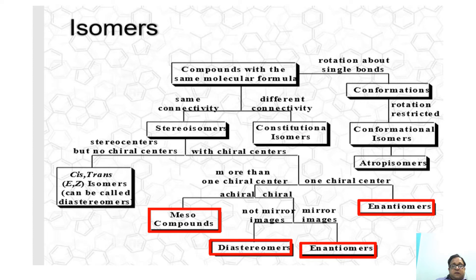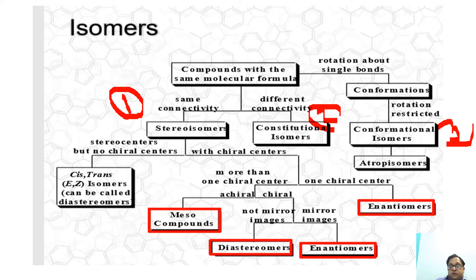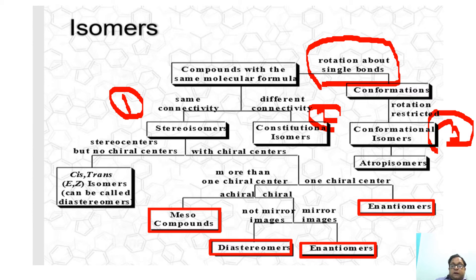As far as the classification of isomers is concerned, they are classified into stereoisomers, constitutional isomers, and conformational isomers. Conformational isomers are the result of rotation about a single bond. On the other hand, molecules that exist with different connectivity are known as constitutional isomers, while molecules with the same connectivity are known as stereoisomers.